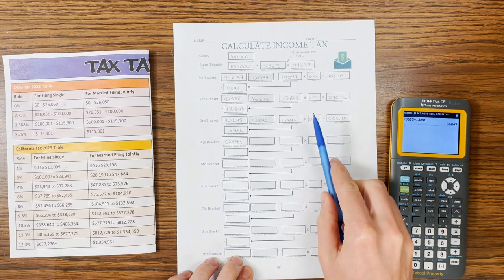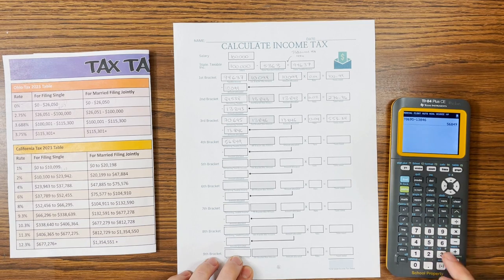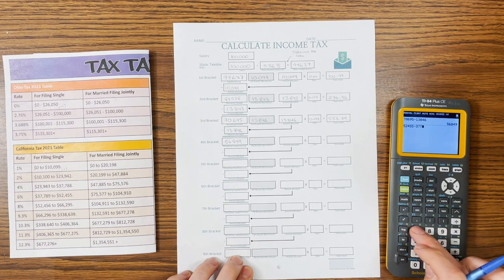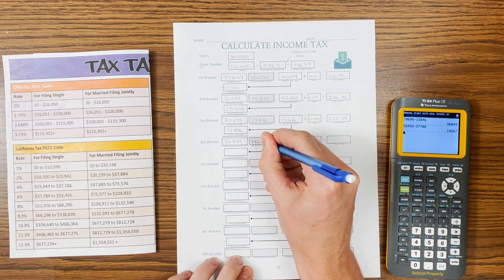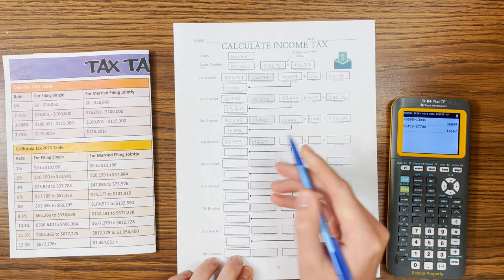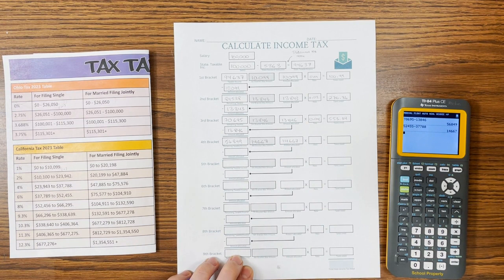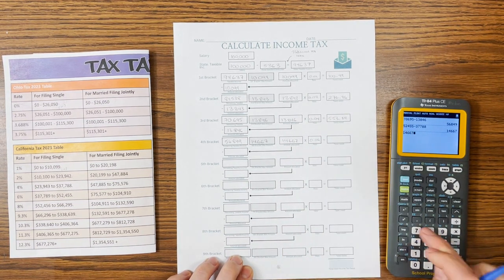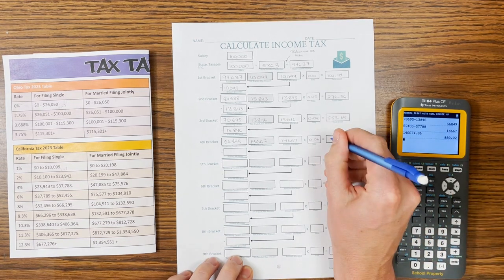And the fourth bracket, so we've done the 4%, we're up to the 6% bracket. $52,000 minus the $37,000 that we've already taxed. $52,455 minus $37,788, $14,667. We're still bigger than that, so we're going to tax that full amount. And this time the rate is 6%, 0.06. So we've got $14,667 times .06, $880.02.